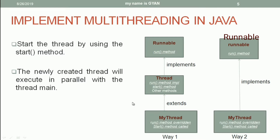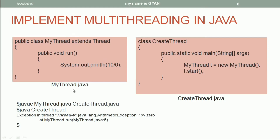Now let's implement multithreading in Java using the Thread class. Here in this code, we are using two Java files: myThread.java and createThread.java. MyThread.java has a class named MyThread which extends the class Thread. That's how the run() method and the start() method of the class Thread get inherited into the class MyThread. After inheriting the run() method from the class Thread, the class MyThread overrides that method. The run() method will execute in a separate thread, different from the main thread.